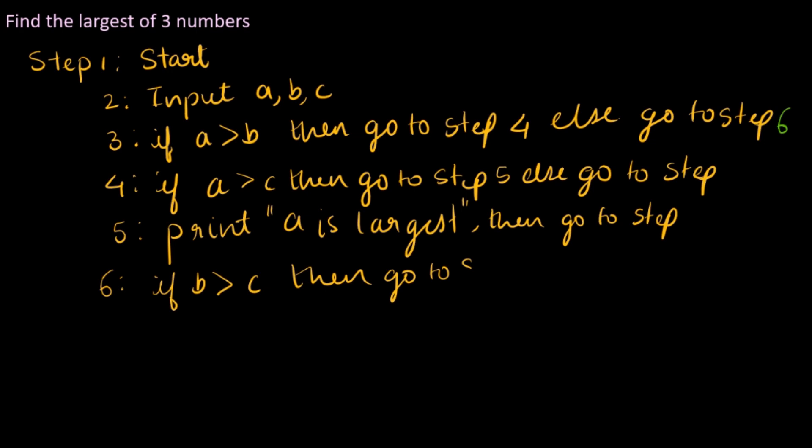So if B is greater than C, then go to step 7. The next step is in order to print B. So print "B is largest". Now the eighth step: if this case isn't true or if it is true, then print "C is largest". And the last step would be stop.